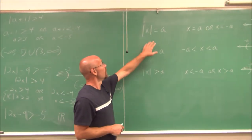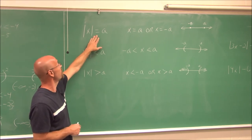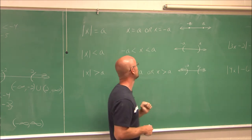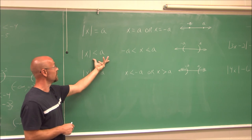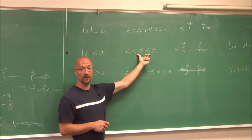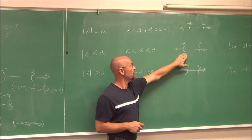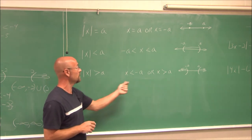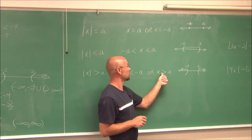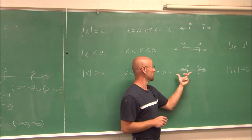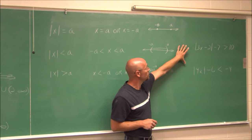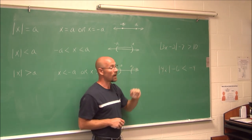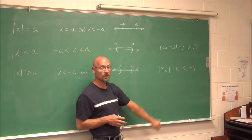Let's do a quick review. We've worked with absolute value equations that give us two solutions — x could be a or x could be negative a, just points on a number line. When we have an absolute value less than a number, we have an intersection, which can be written as a double inequality: negative a is less than x is less than a — a single interval. When we have an absolute value greater than a number, we're looking for a union — x less than negative a or x greater than positive a — the union of two separate intervals. I have two examples for you to try yourself: one with greater than and one with less than. Make sure you check a test point in your intervals. Good luck, and thank you for watching.